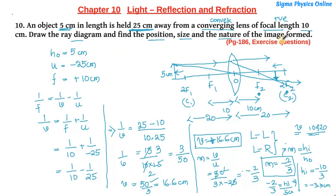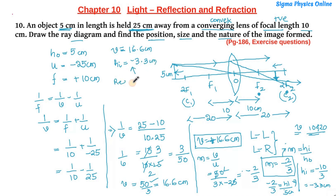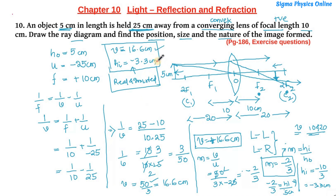To summarize: the position of the image — the image distance — is 16.6 centimeter to the right of the optical center. The size of the image is minus 3.3 centimeter, where the negative sign indicates it is real and inverted. The image is a real, inverted image formed at 16.6 centimeter from the optical center with a height of 3.3 centimeter. These values are in accordance with the ray diagrams studied in theory. This was the solution to this question.